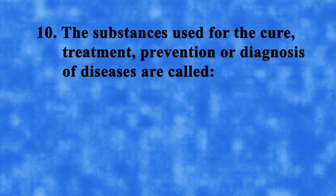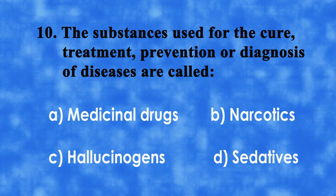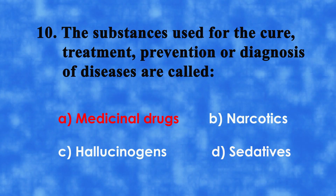No. 10: The substances used for the cure, treatment, prevention, or diagnosis of diseases are called A. Medicinal drugs, B. Architects, C. Hallucinogens, or D. Sedatives. The correct answer is A. Medicinal drugs.